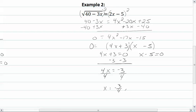And then we get x = -3/4 and x = 5. Now we need to check that in our original equation.